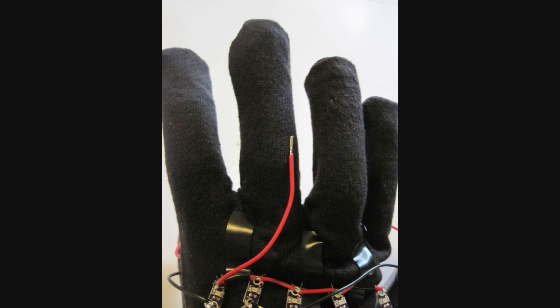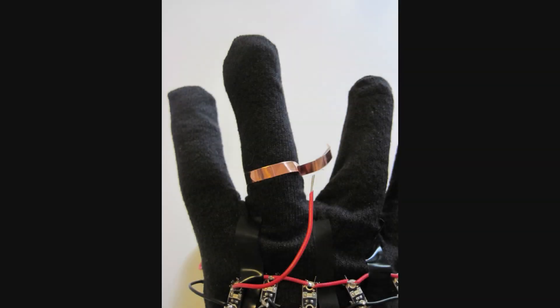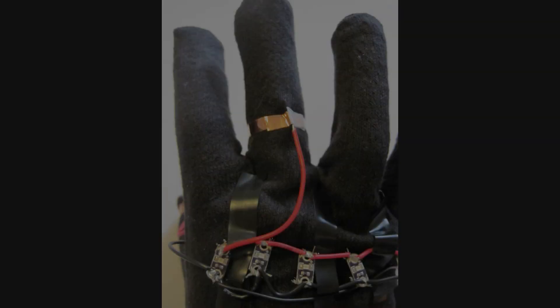You're then going to do the same thing with the middle finger of the glove. Make sure you don't put the copper tape too far up because you need it to be able to touch the same point on the index finger that the thumb can reach.